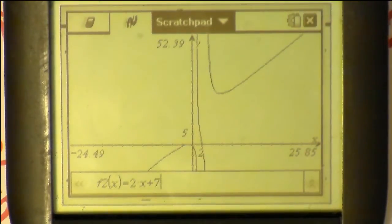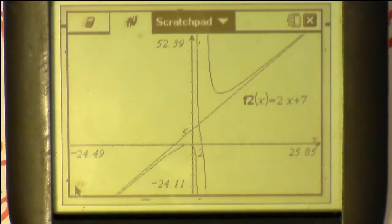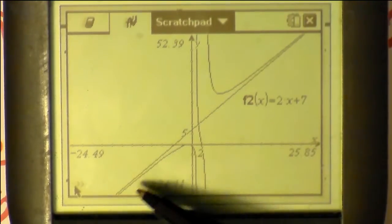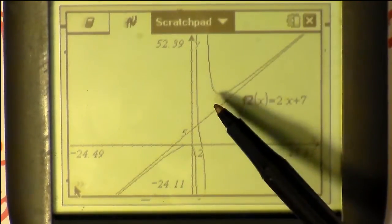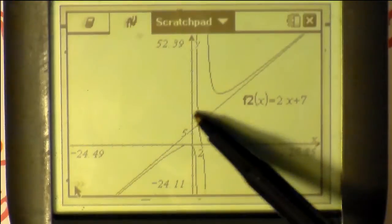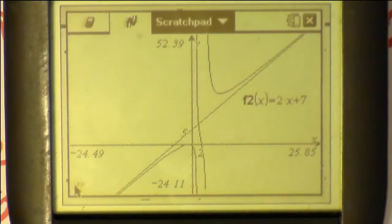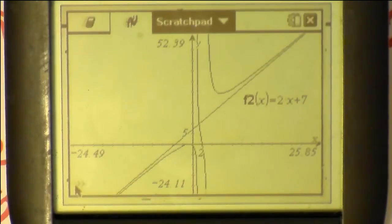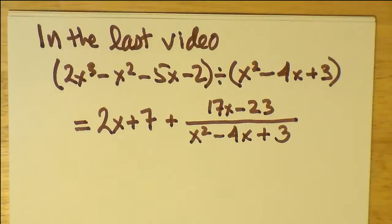And as we saw, when all we did was enter 2x plus 7 as our line, we got a line and it seemed to behave quite convincingly as an asymptote, except for that little bit of behavior in the middle. That behavior in the middle, notice that one part goes up to positive infinity as x approaches positive 1 from the right and down to negative infinity as you approach plus 3 from the left.